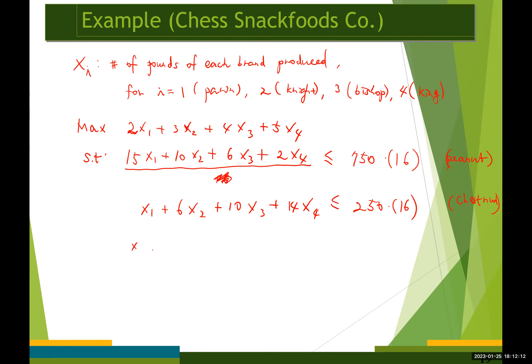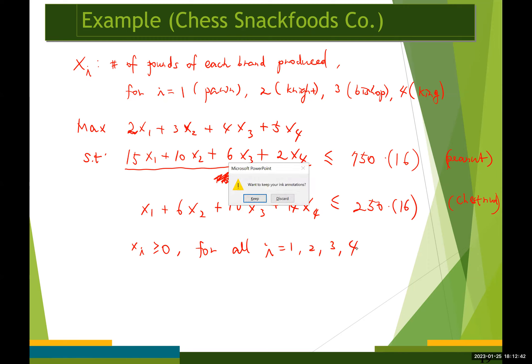Of course, we also add sign restrictions: each decision variable xi ≥ 0 for i = 1, 2, 3, 4. Combining everything gives us the complete LP model. Now let's work on Lindo and Lingo models for this problem.